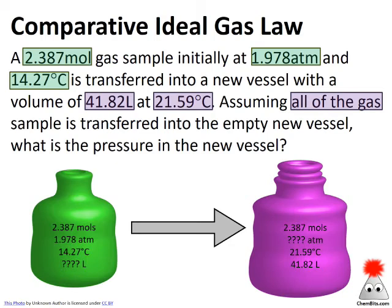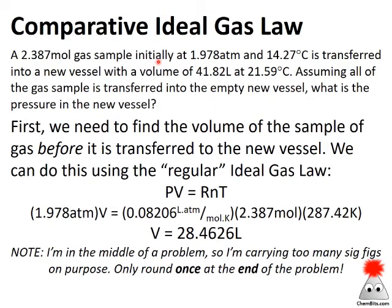We are specifically told this is an empty new vessel, so the total moles of gas in the new vessel are just what was in the original. Let's find the volume of the initial container using PV = nRT. Plugging in the pressure, using R = 0.08206 L·atm/(mol·K), the number of moles, and the temperature converted to Kelvin, and solving for V, we get 28.4626 liters. Note: this has too many sig figs, but we carry extra to avoid rounding too early — we'll round at the end.